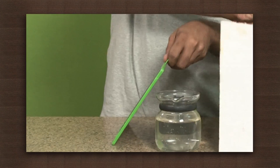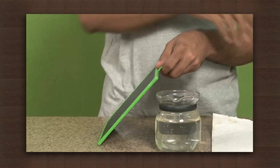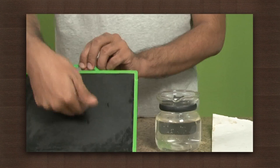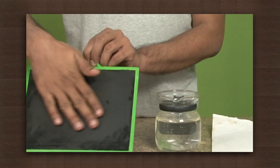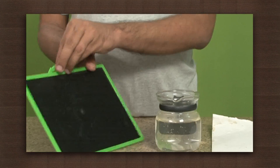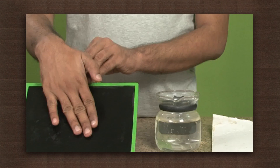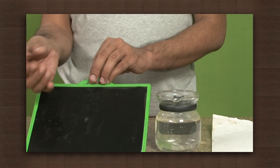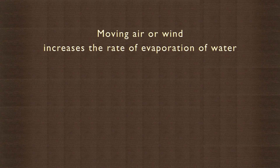Turn the slate over and compare the two sides for degree of wetness. You will see that the side that was not fanned is much wetter than the side that was fanned. So moving air or wind increases the rate of evaporation of water.